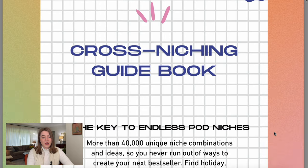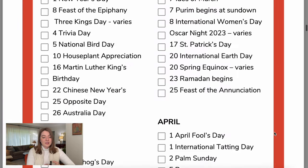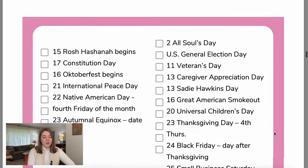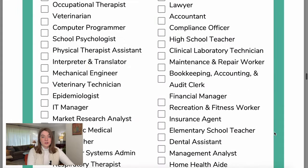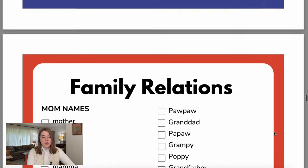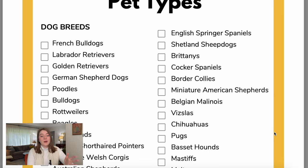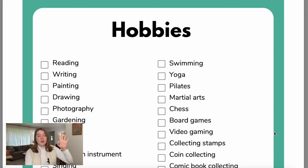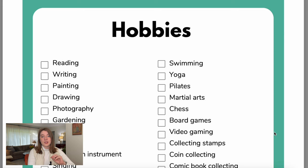So I have my cross-niche guide pulled up now. If you haven't used this before, it basically just has a bunch of different categories — a holiday category, a career category with hundreds of different careers that you can cross with family relations, a bunch of different kinds of pets, and hobbies. I think hobbies is where I want to concentrate today. I'm choosing Christmas, and then I'm going to pick out a few hobbies and get some help from ChatGPT to come up with some really amazing phrases to use on these t-shirts.